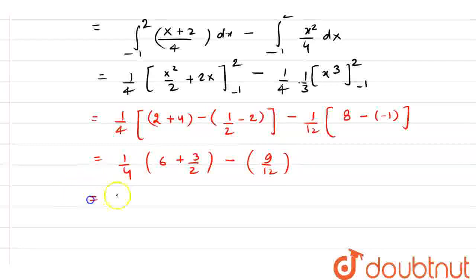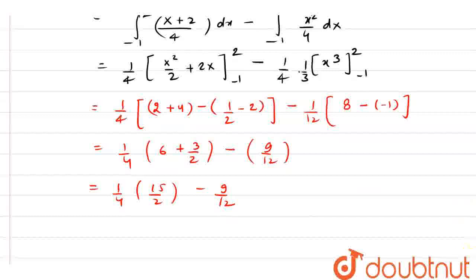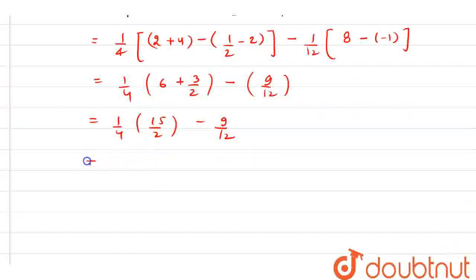Now, on solving this, we will get 1 by 4. And we have 12 plus 3, 15 by 2 minus 9 by 12. Now, on solving this, we will get 15 by 8, 15 by 8 minus 3 by 4. Now, here 8 is my LCM. Hence, I can take 15 minus, we have 6 here. So, 15 minus 6 is what? 9 by 8. And this is my final answer.